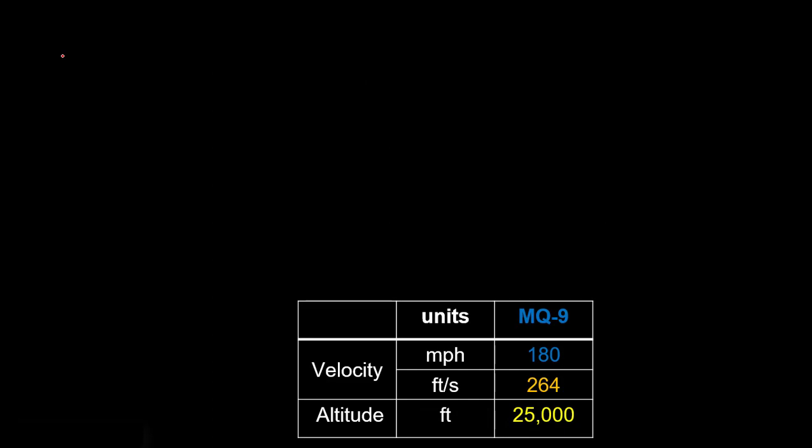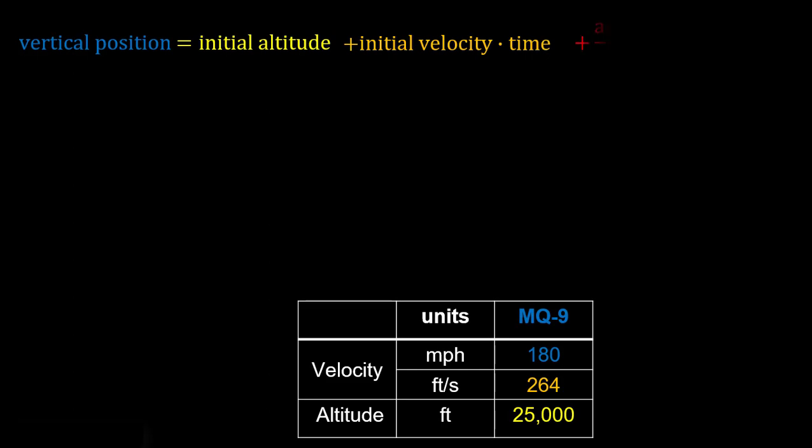And this is really all the information that we need. So we'll start off by looking at the vertical position of the bomb once it's released. And that vertical position we could find as the initial altitude plus the initial velocity times time plus the acceleration over 2 times time squared. And of course, we're dividing by 2 on the acceleration because we integrated acceleration twice to get this. So to plug in some numbers for these values, our vertical position we'll call Y of T.